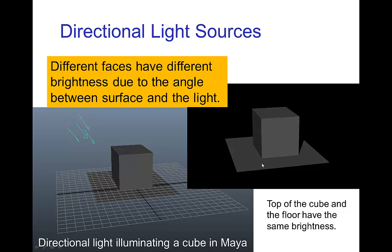but each face has a different brightness depending on the angle between the face and the light source. By the way, the top of the cube and the floor have the same brightness since they're facing in the same direction.